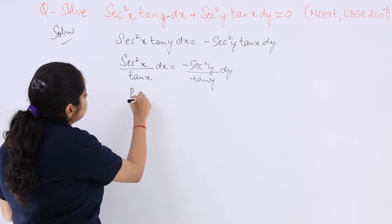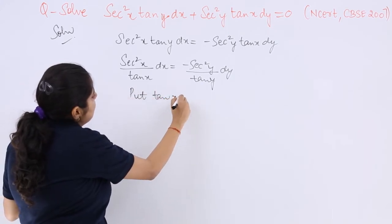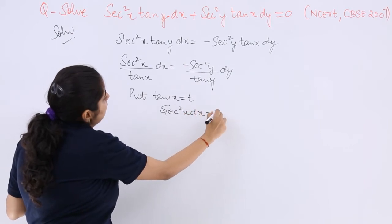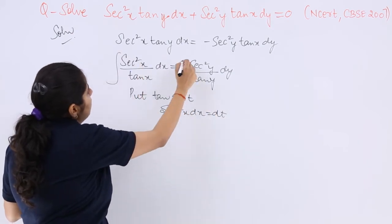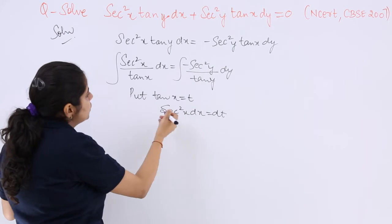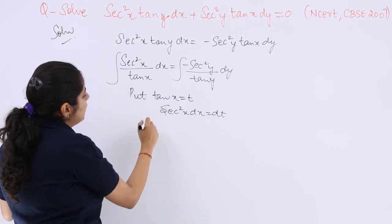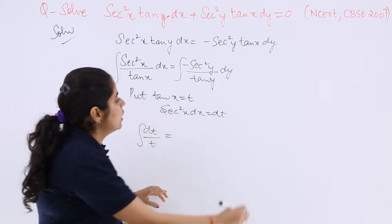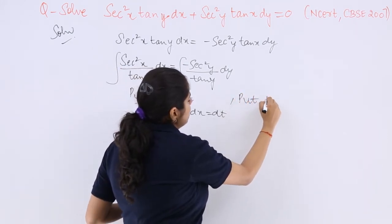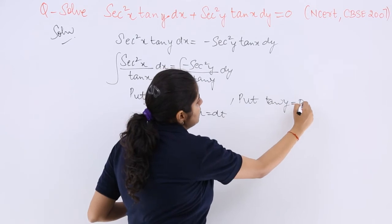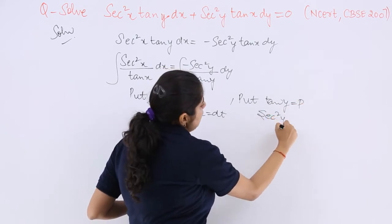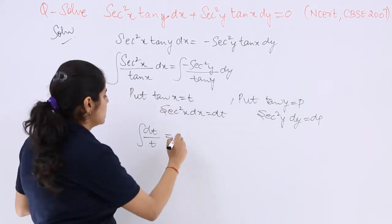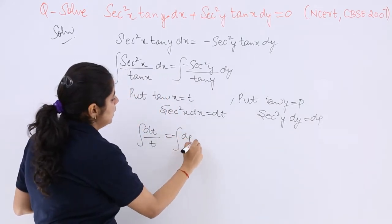So I write, put tan x = t, sec²x dx = dt. Because anyways I am integrating, right? So what will it become? It will become dt/t integration. Here also, if I put tan y = p, sec²y dy = dp. So it is -dp/p.